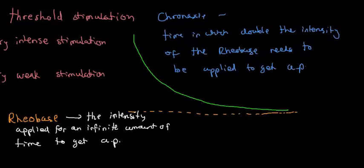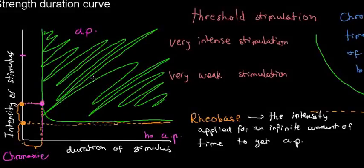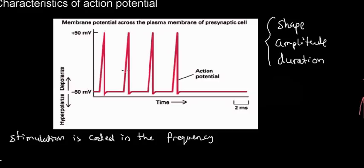It's pretty important to know these two concepts — rheobase and chronaxie — because they represent the entirety of this strength-duration graph. We've gone through the stimulation threshold, the shape of the action potential curve, and the fact that all action potentials have the same shape, amplitude, and duration. The strength of the stimulation is answered by how closely together the action potentials occur: close together means very intense stimulation, spread far apart means weaker stimulation. Hopefully you found this at least somewhat intuitive, and we'll see you in the next video.